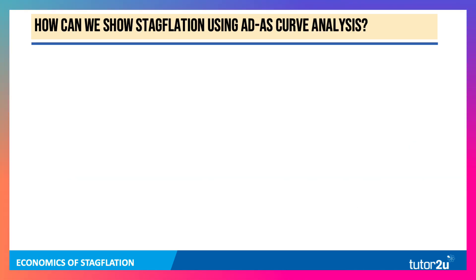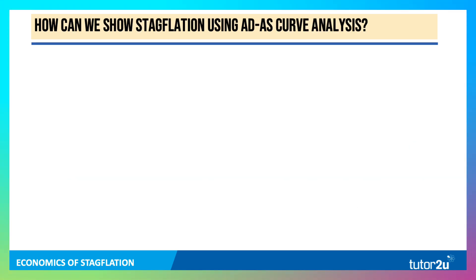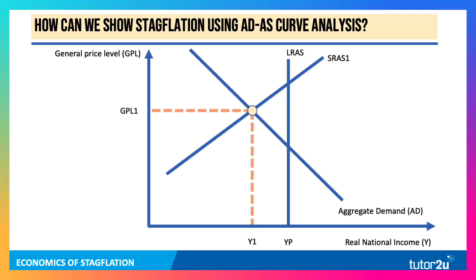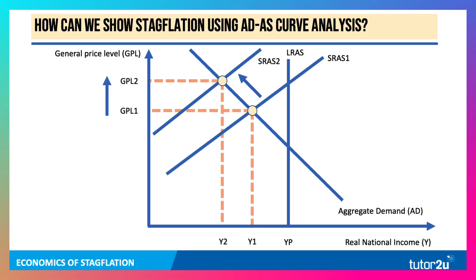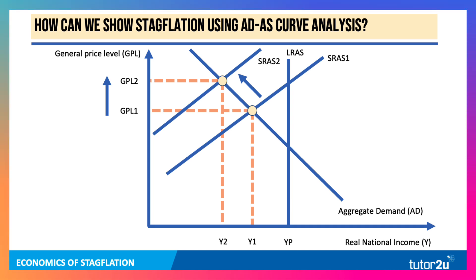How can we show stagflation if you're an exam student? One approach is to use AD/AS curves. Here's a model of the economy showing the rate of inflation on the y-axis and national income on the x-axis, with an equilibrium at Y1 and GPL1. A supply shock — an increase in the world price of key commodities if you import them — shifts aggregate supply to the left, causing real output to fall and the rate of inflation to go up. And that really is the way to show stagflation. You can add to that if you get a wage-price response.